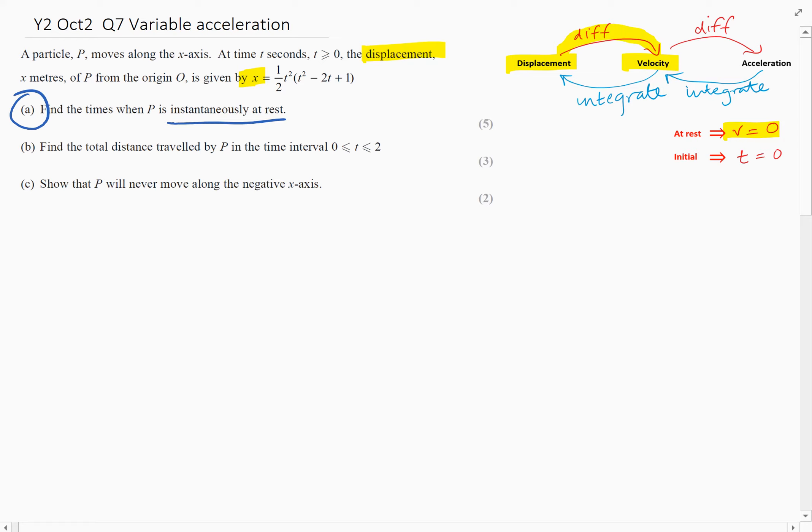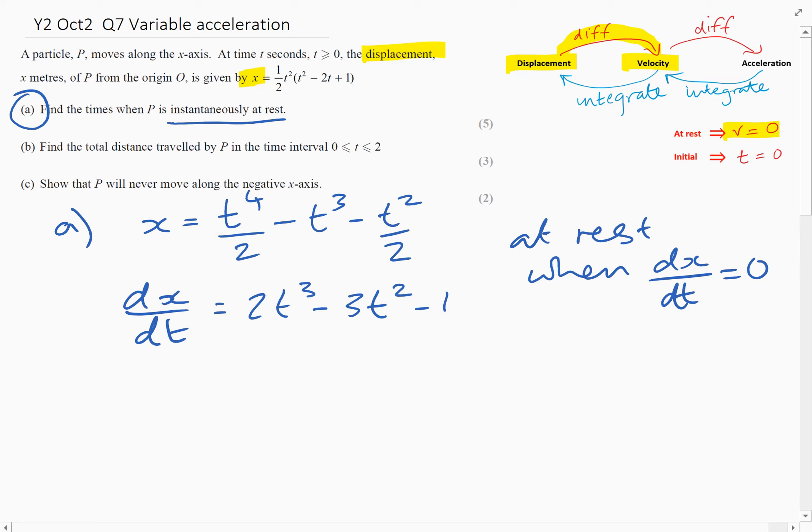Before we do though, it's probably helpful to multiply out those brackets. So X equals T to the power 4 over 2 minus, the 2's will cancel, so that would be T cubed minus T squared over 2. So we're trying to find, so it's at rest when DX by DT, the velocity, equals zero. So let's find DX by DT, which is going to be 2T cubed minus 3T squared minus T.